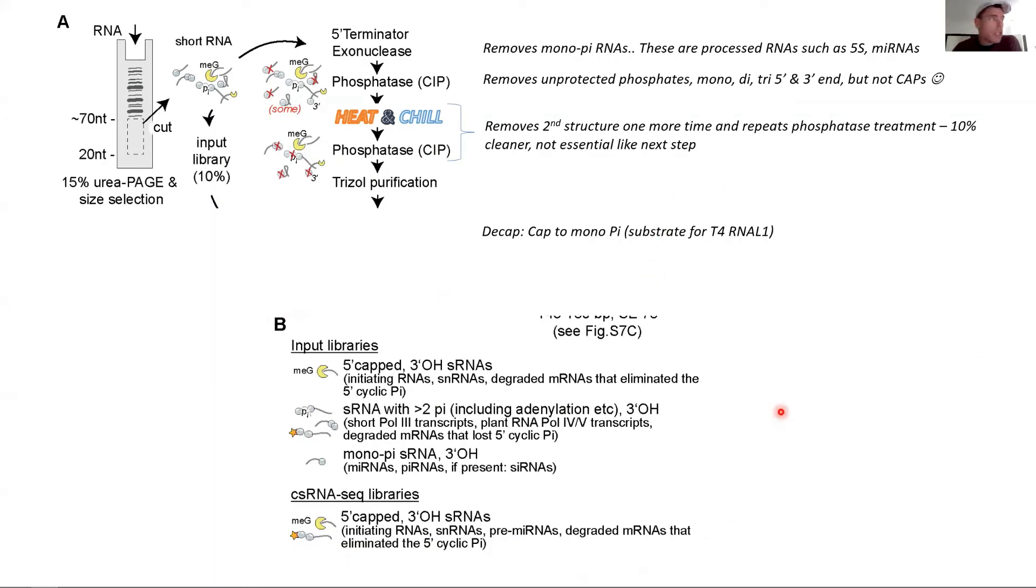A quick summary of what you'd find in these two libraries. In your input libraries you find the same thing as in your CSRNAseq libraries, but this is actually a tiny fraction of what's in the input libraries. The vast majority of these species are the monophosphorylated microRNAs as well as short small RNAs, snoRNAs, and some of them might even have a cap and sneak through.